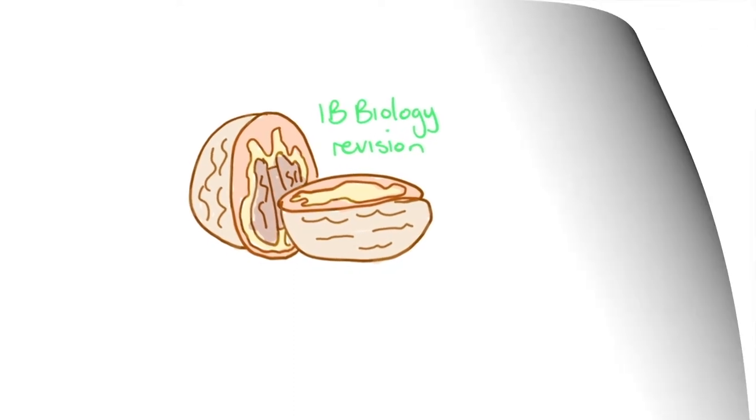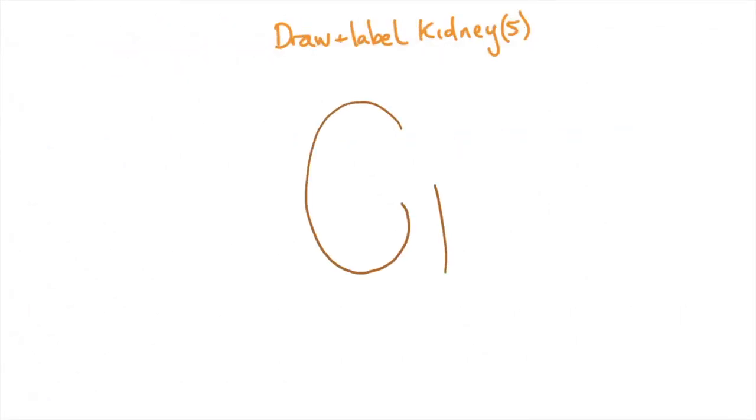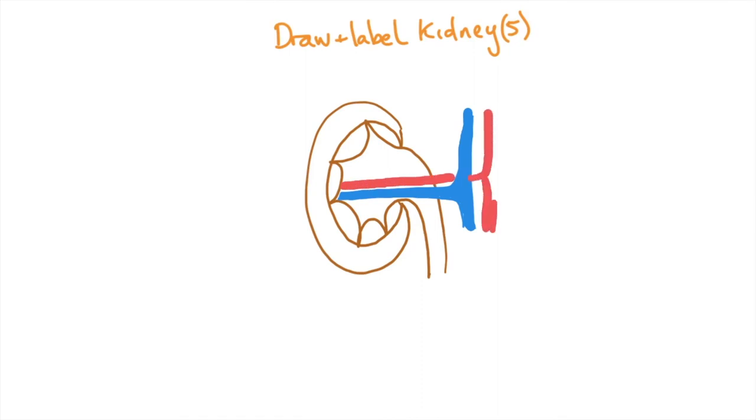Okay, carrying on with 11.3, draw and label the kidney for five marks. Try to draw it the same way every time. Watch what my pen is doing and copy along. That's nearly it. We're just going to add a vein, color that in quickly, and then add an artery, color that in quickly, and that's it for the drawing.